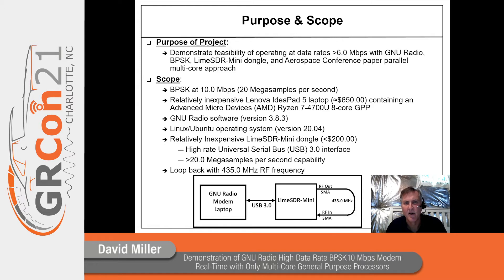The purpose of this project is to demonstrate that data rates well above 6 megabits per second can be achieved with this parallel multi-core approach. Scope: BPSK at 10 megabits per second, a laptop with an 8-core CPU, version 3.8.3 of GNU Radio, an Ubuntu operating system, a dongle with a high-rate USB 3.0 interface. I conducted a test with an RF loopback test configuration shown at the bottom of this chart.